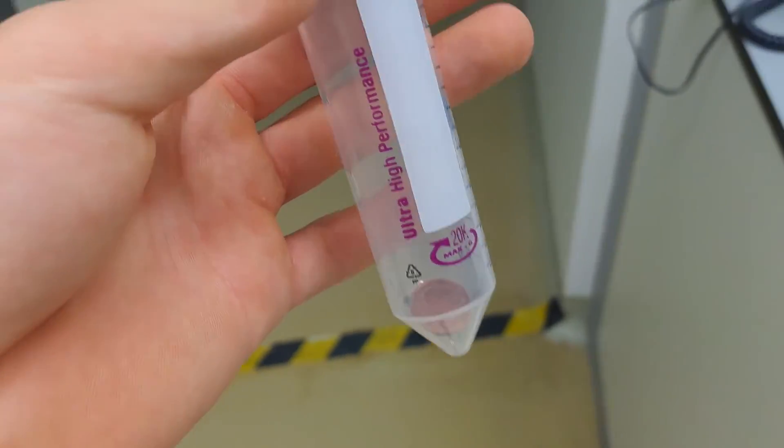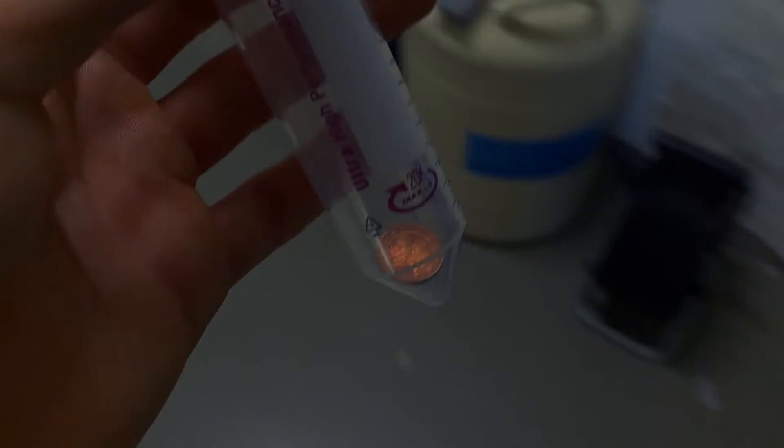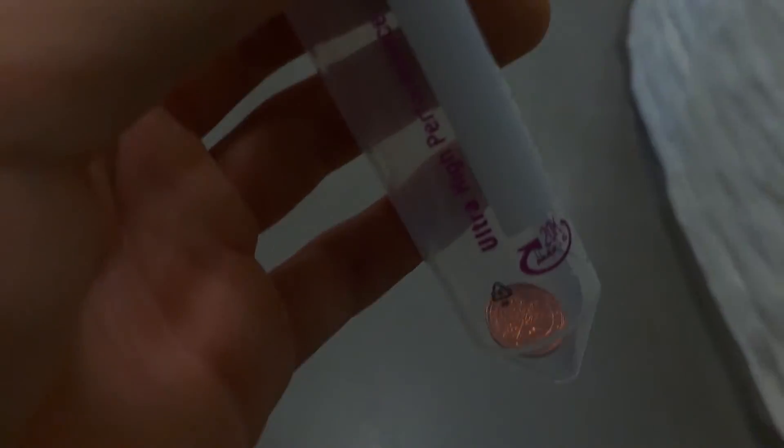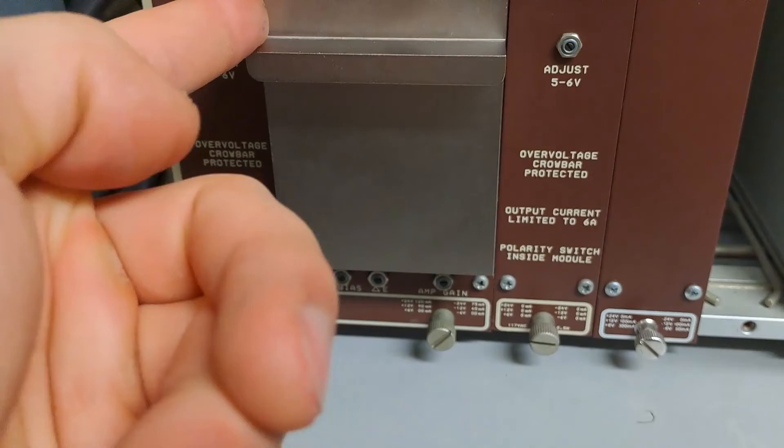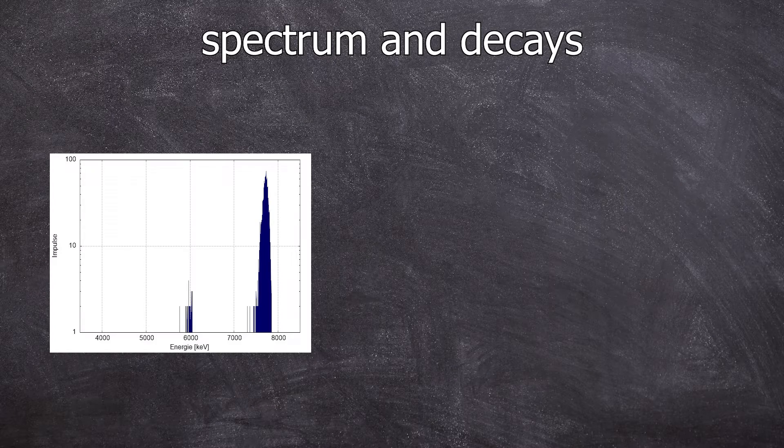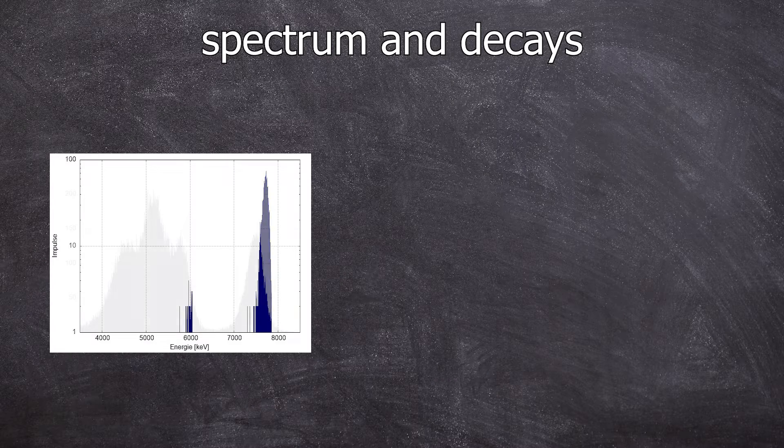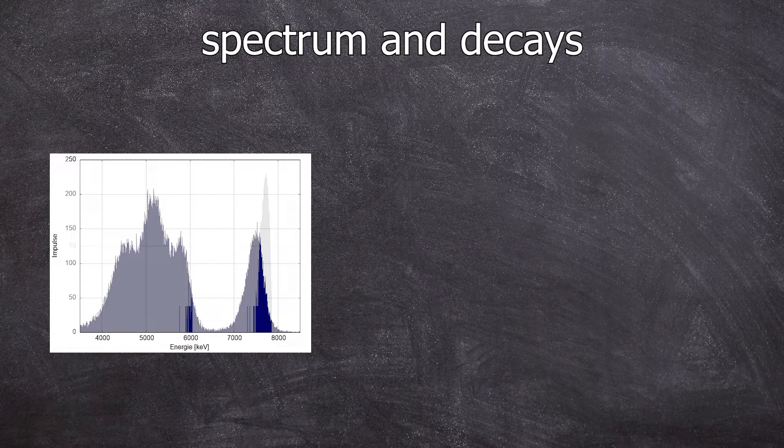After half an hour, the now radioactive coin can be taken to the alpha spectrometer. Once there, it can be measured for 1000 seconds to obtain a spectrum. I intentionally cut it out like this to now overlay the radium spectrum from the previous video.